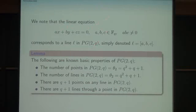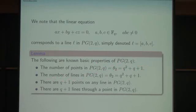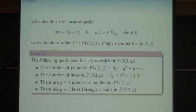We consider the linear equation AX plus BY plus C equals zero, which corresponds to a line in PG(2,Q). We denote a line by its coefficient (A,B,C), where not all are zero. The total number of points in PG(2,Q) is Q squared plus Q plus one, sometimes denoted theta two. The number of lines is the same. There are Q plus one points on a line, and Q plus one lines passing through a point — this is called duality, because swapping points and lines leaves the statement unchanged.